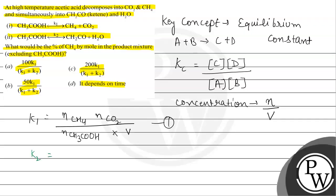For the second equation, K2 equals the number of moles of CH2CO multiplied by the number of moles of H2O, divided by the number of moles of CH3COOH, multiplied by the volume. This is our second equation.